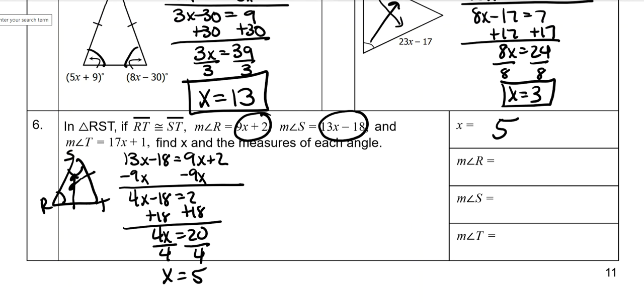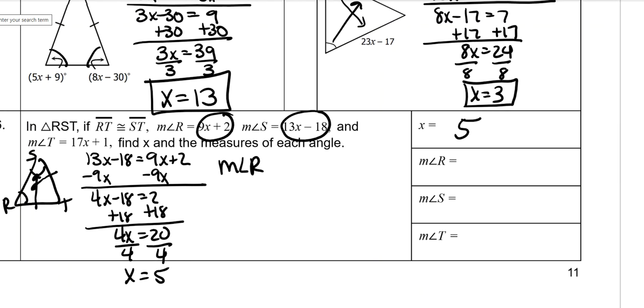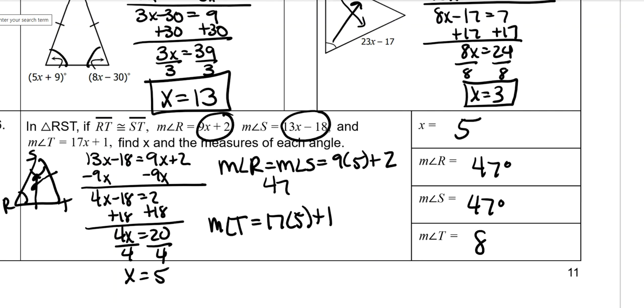And then I have to find all those angle measures, but we just found out that R and S are the same, so we just need to plug it into one of them. So 9 times 5 is 45, plus 2 is 47. And then for T, you've got to plug that one in. So 17 times 5 plus 1. 17 times 5 is 85, plus 1 is 86. You could have also done 180 minus 47 minus 47. It would have given you the same answer.